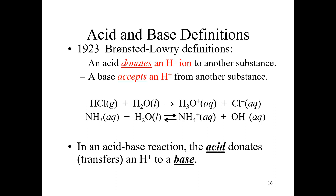In the Brønsted-Lowry definition, every behavior of acids and bases has to do with donating or accepting a hydrogen ion, which means you always have to have the donor and the acceptor in your chemical equation. Notice HCl reacting with water — we can see the hydrogen from HCl being donated to the water molecule to create the hydronium ion. This definition explains why ammonia is a base: water donates a hydrogen ion to the ammonia, converting it into an ammonium ion. When water loses that proton, it's left with the electron and becomes the hydroxide ion that we detected in our litmus paper and indicator tests.